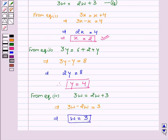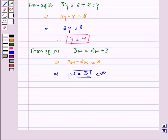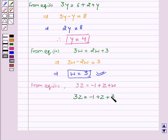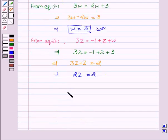Now on substituting the value of w in equation 3, we get 3z equal to -1 plus z plus 3. This implies 3z minus z equal to 2, so 2z equal to 2. Therefore, z equal to 1.